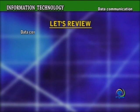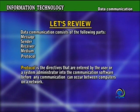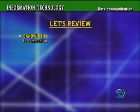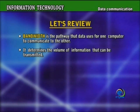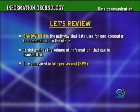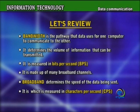Let's review. Data communication consists of the following parts: message, sender, receiver, medium, and protocol. Protocol is the directives entered by the user or a system administrator into the communication software before any communication can occur between computers on a network. Bandwidth is the pathway that data uses for one computer to communicate to the other; it determines the volume of information that can be transmitted, measured in bits per second (BPS), and is made up of many broadband channels. Broadband determines the speed of the data being sent, measured in characters per second (CPS).